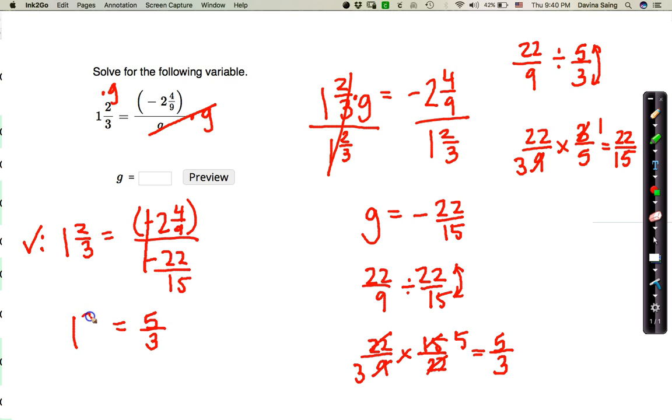And then here, it's 1 and 2 thirds. Now, are those exactly the same? Are they equivalent? The answer is yes. Why? Because 3 times 1 is 3 plus 2 is 5. So 5 thirds does equal 5 thirds. So I know for sure that my answer is correct.